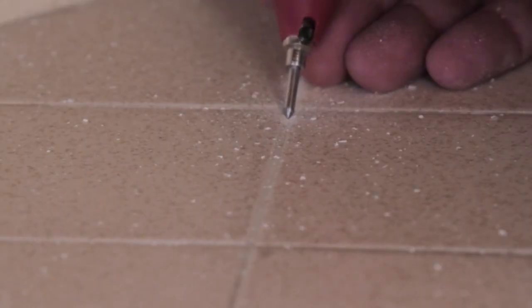The Regrout Tool is the fastest, easiest, cleanest way to make old tile look new again.